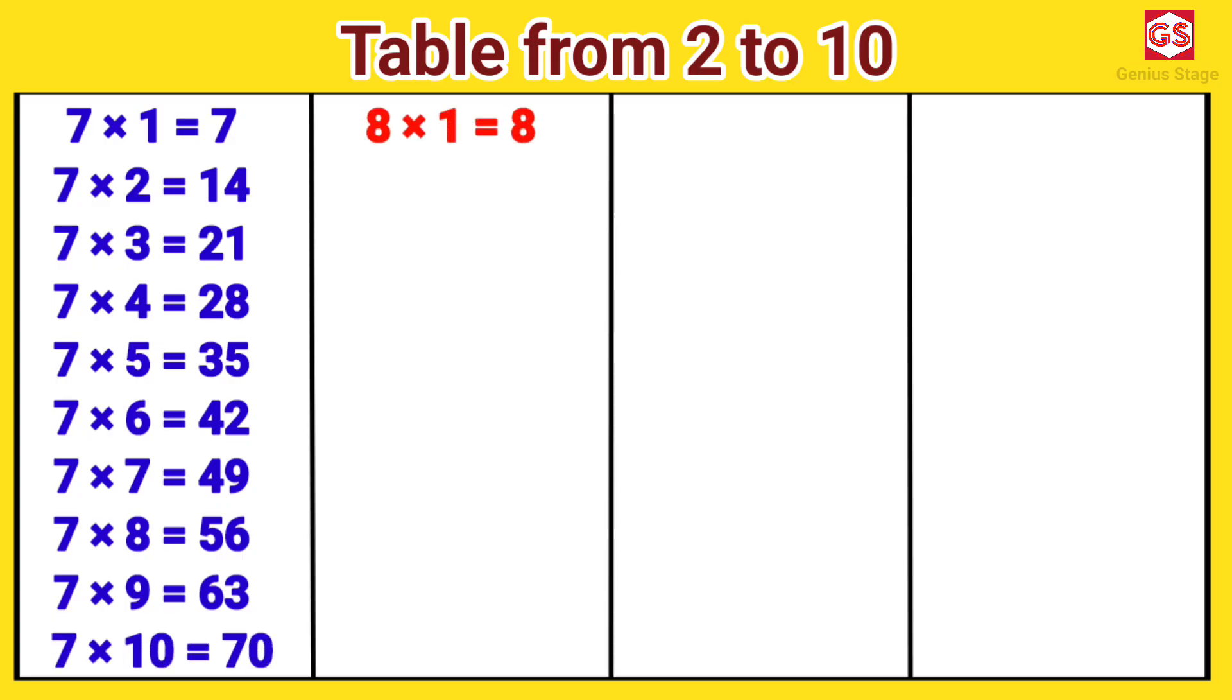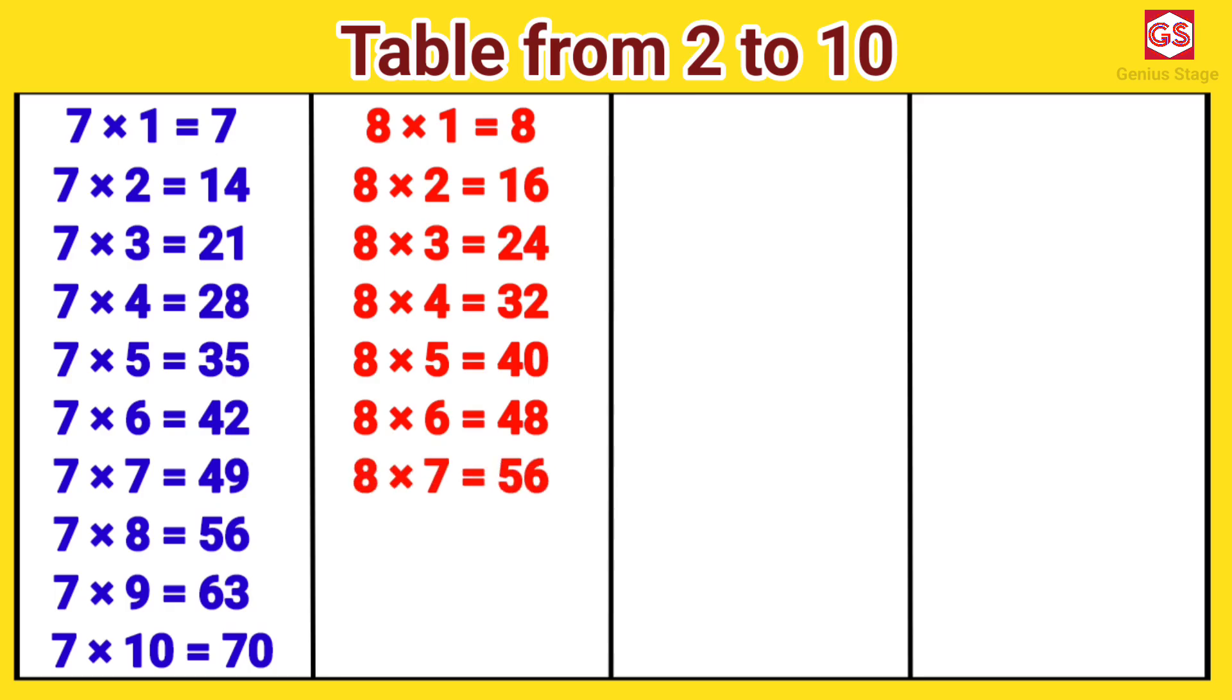8 ones are 8. 8 twos are 16. 8 threes are 24. 8 fours are 32. 8 fives are 40. 8 sixes are 48. 8 sevens are 56. 8 eights are 64. 8 nines are 72. 8 tens are 80